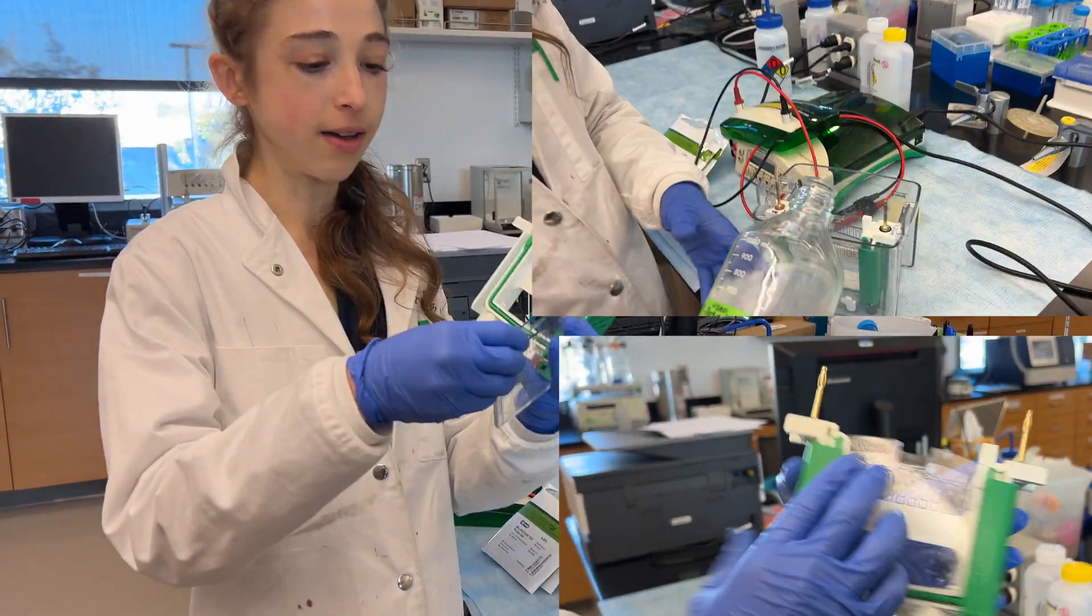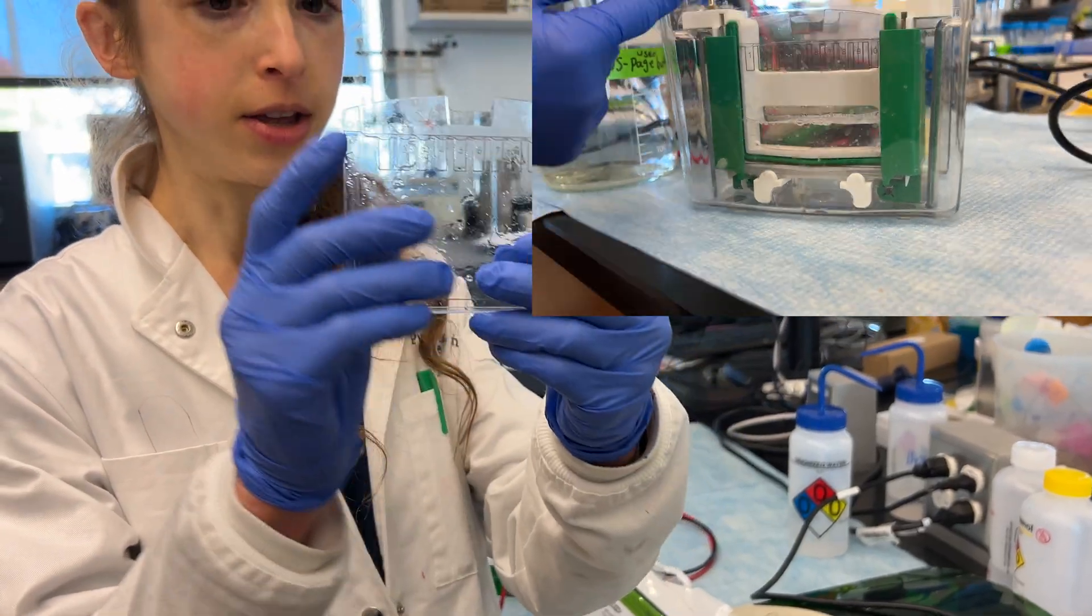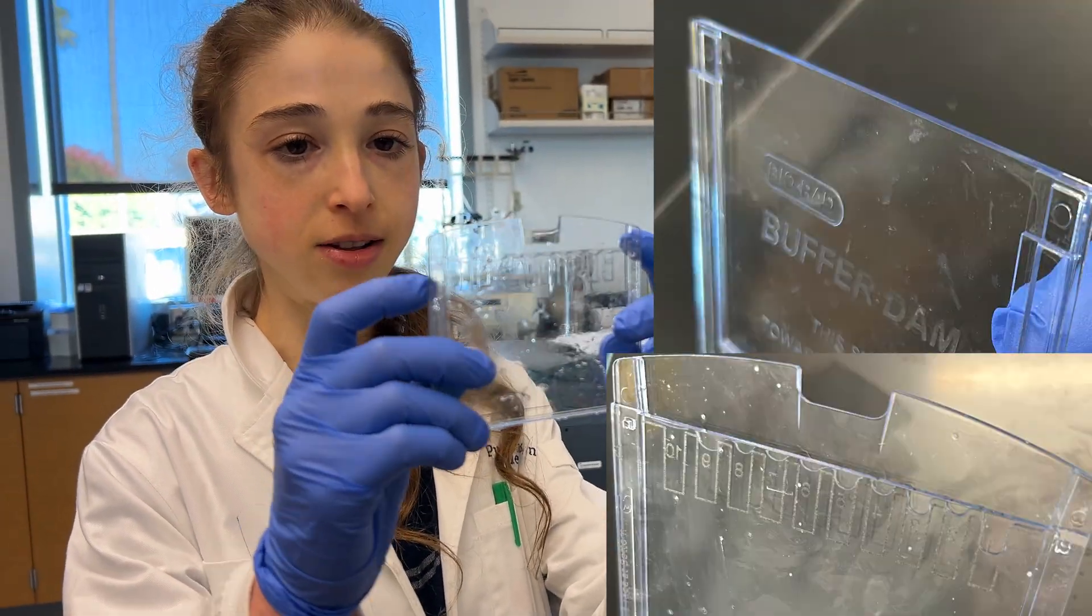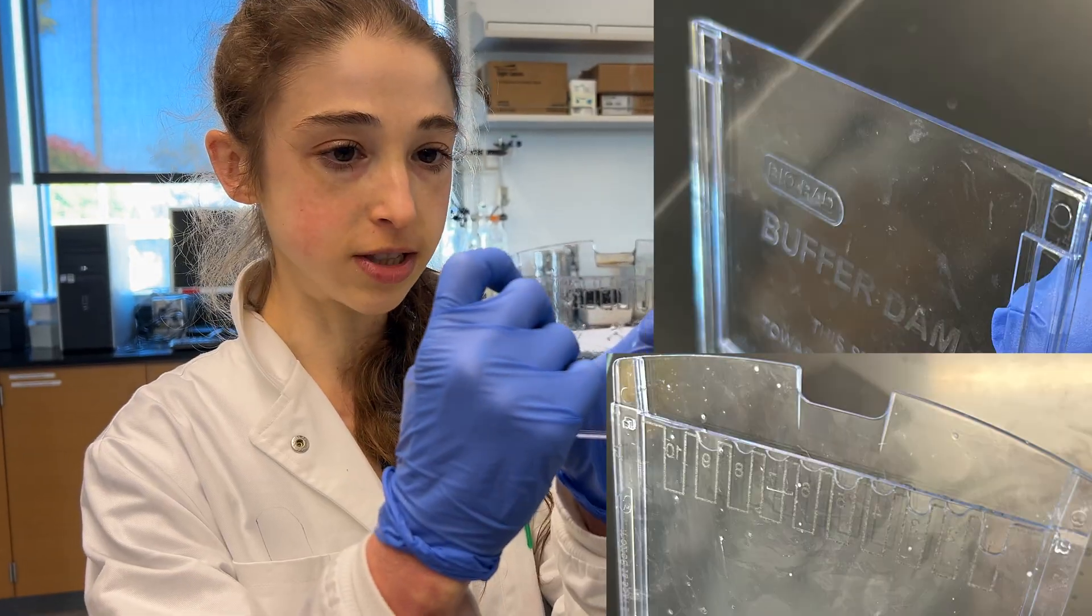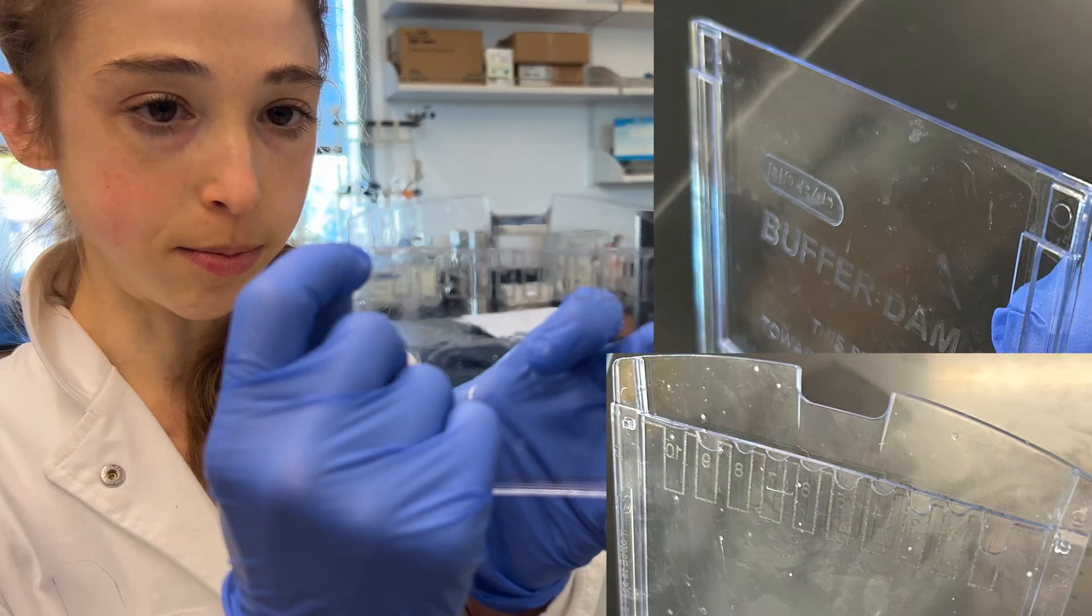So when you have your gel cassette or your buffer dam, you'll see that one side is going to be tall and then the other side is going to be short. The top of this short part needs to be flush with the bottom of the rubber part.